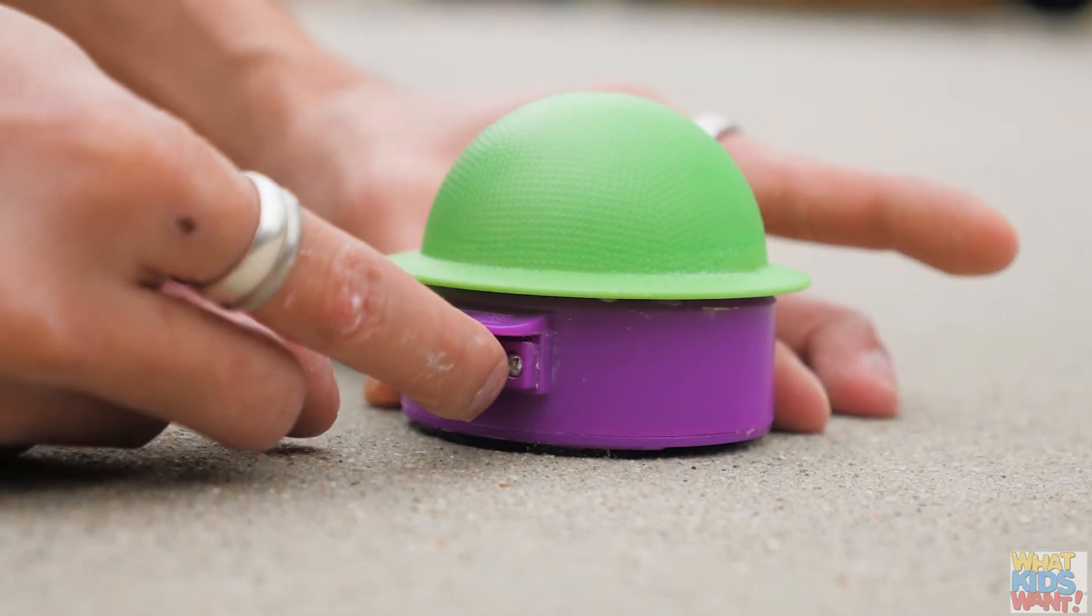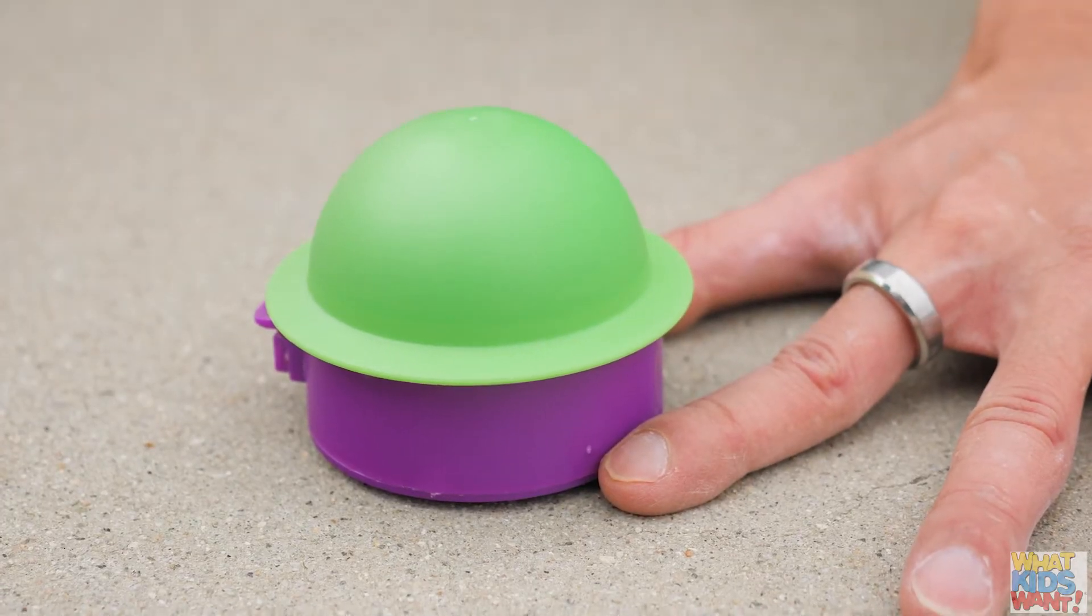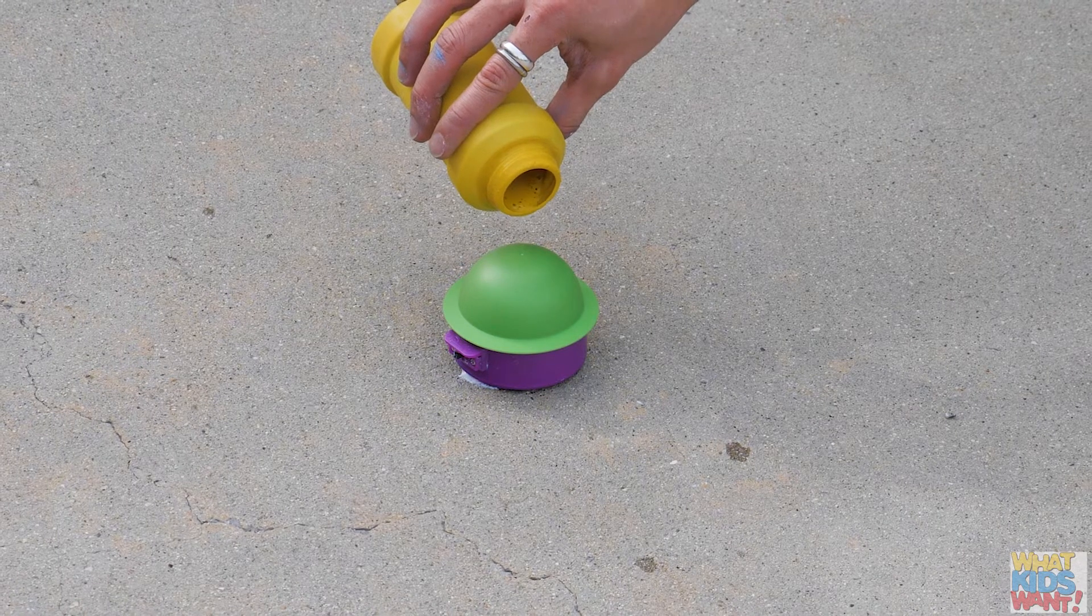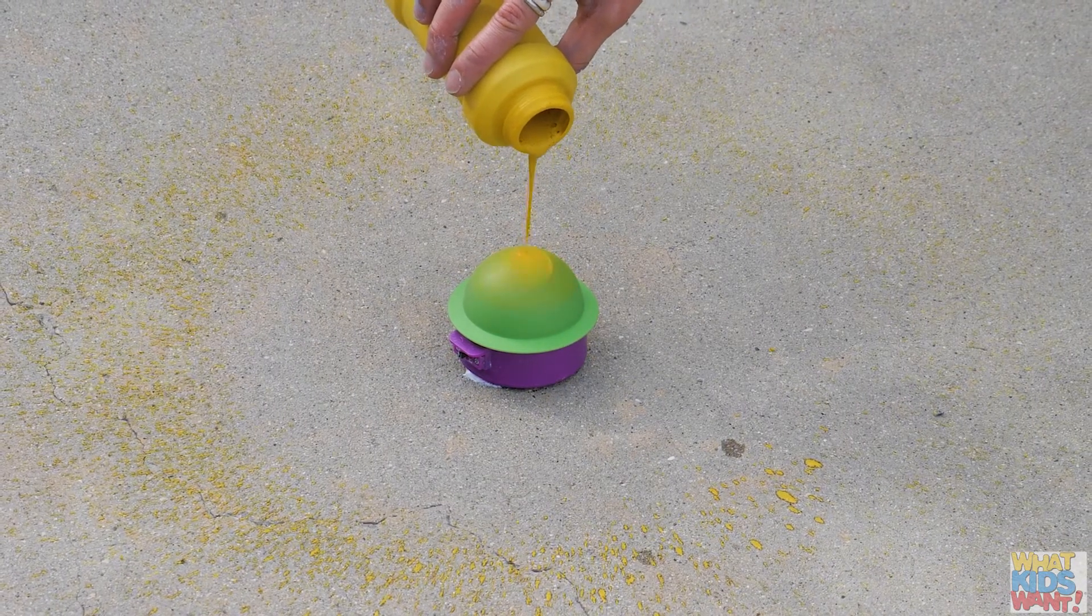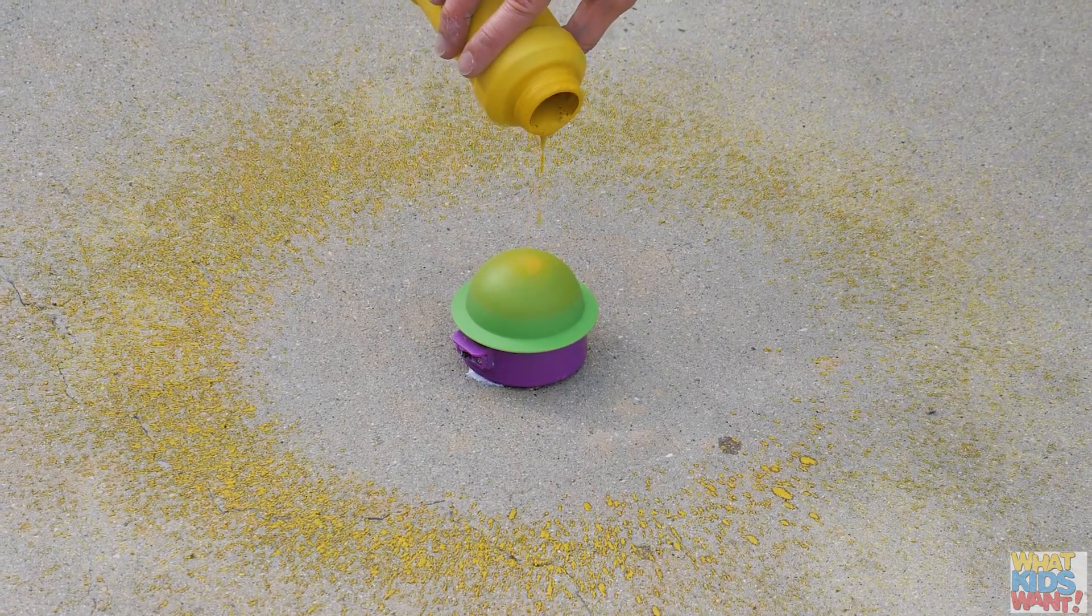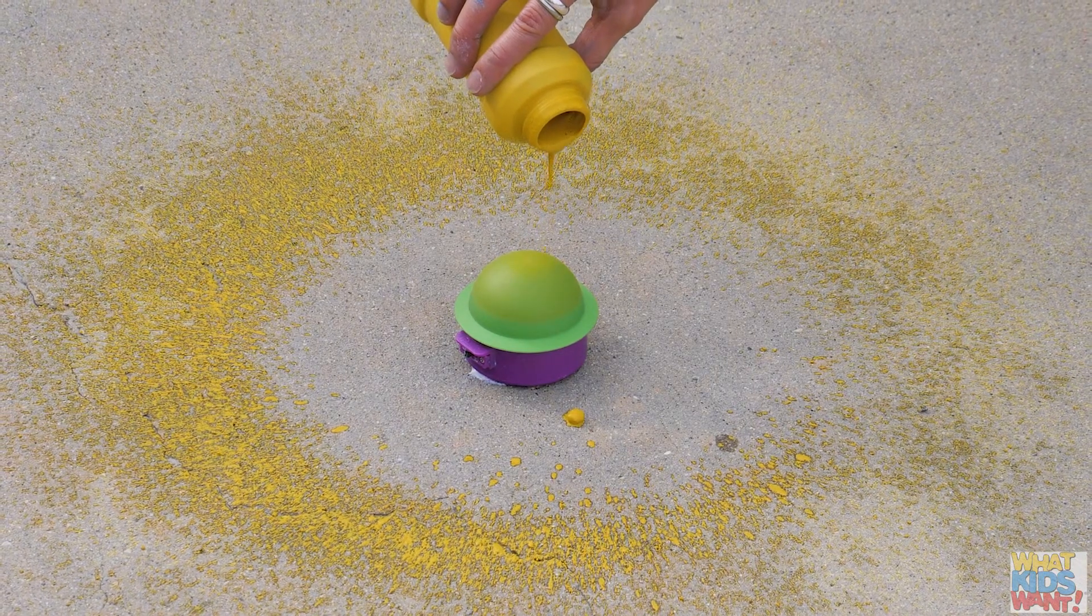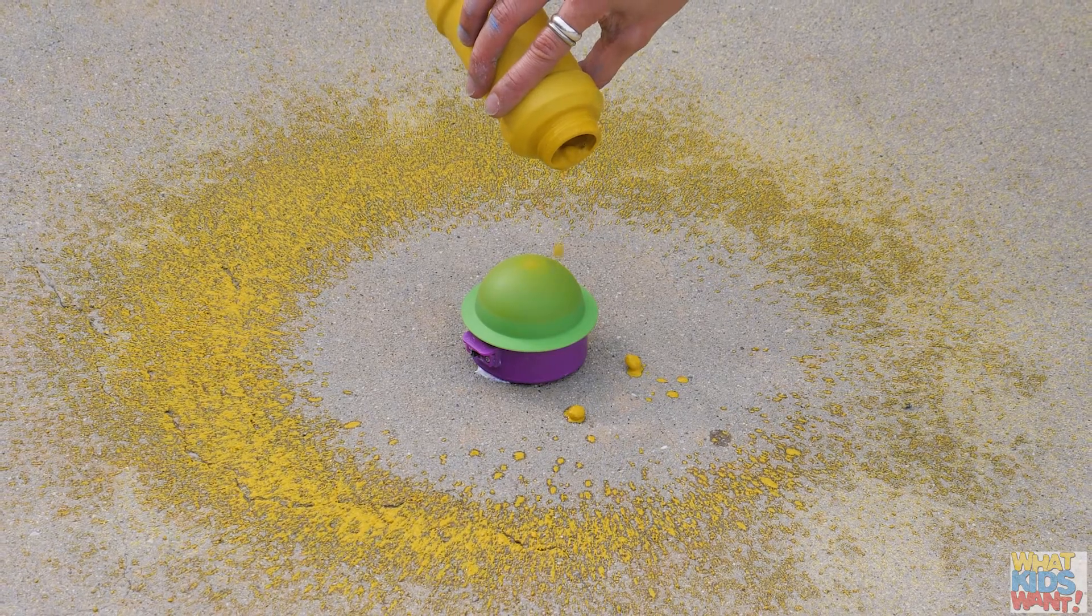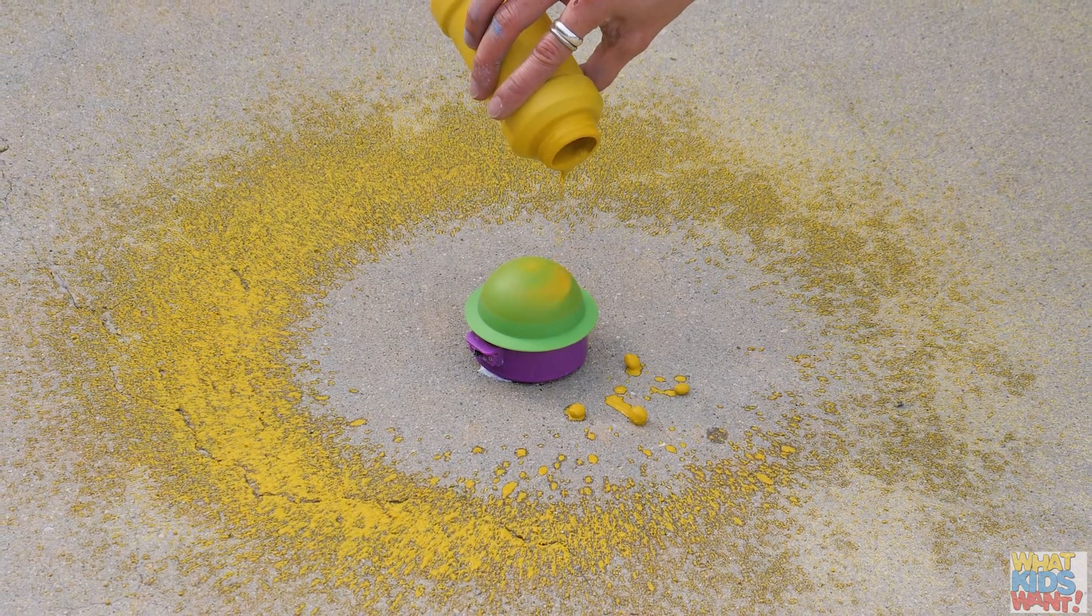Turn the chalk spinner unit on by pressing the on-off switch as shown. Hold a bottle of chalk paint four to six inches above the chalk spinner and slowly pour the paint onto the top. Pour a small amount of paint at first and then pour additional amounts if needed to achieve your desired effect.